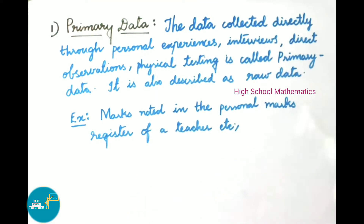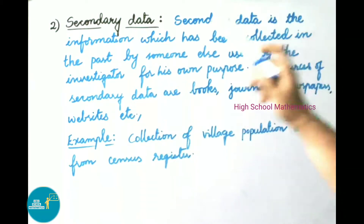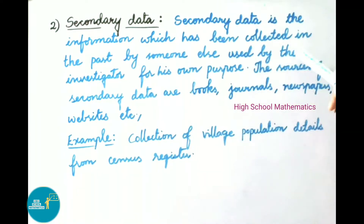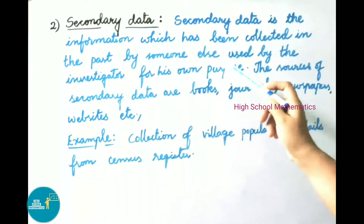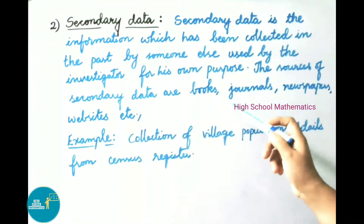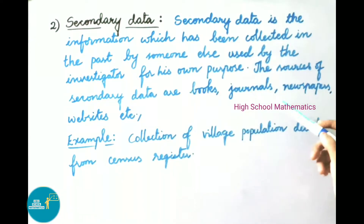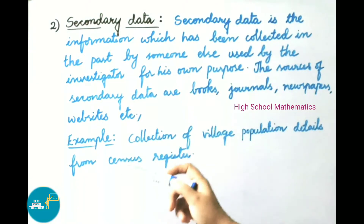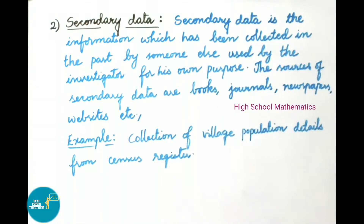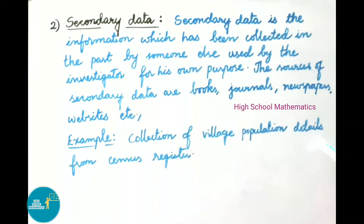Second, secondary data. Secondary data is the information which has been collected in the past by someone else and used by the investigator for their own purpose. The sources of secondary data are books, journals, newspapers, websites, etc. For example, collection of village population details from a census register.